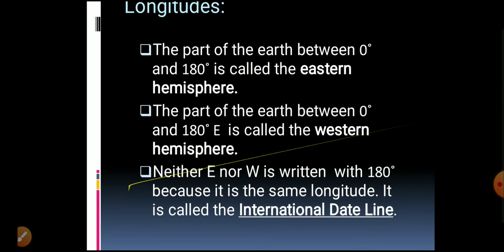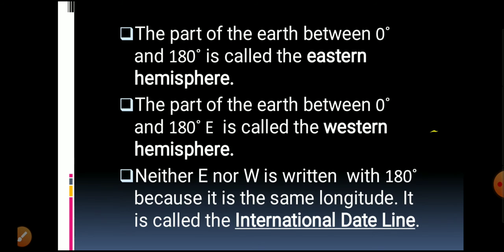Neither 'E' nor 'W' is written with the 180-degree longitude because it is the same longitude for both hemispheres. It is called the International Date Line. Note: in the previous point, where 'western hemisphere' was mentioned, it should read 0 degrees to 180 degrees west.